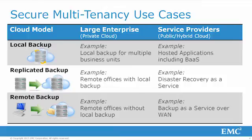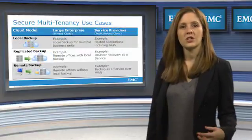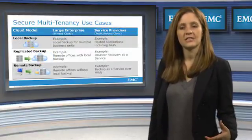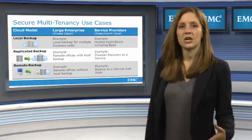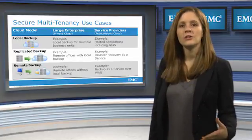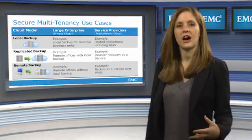Finally, is remote backup. For a large enterprise, this is most likely protecting multiple remote offices that do not leverage local backup, so they backup over the WAN to a data domain at the main data center. In a service provider environment, this would be backup as a service, where customers backup from their sites over the WAN to the service provider's facility. Now, with broad support across all cloud deployment models for data protection, data domain systems are truly cloud ready, the only protection storage in the industry to offer this capability.